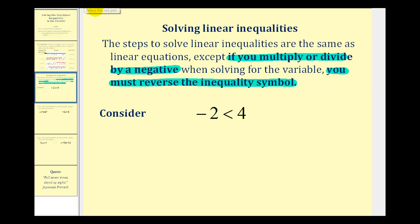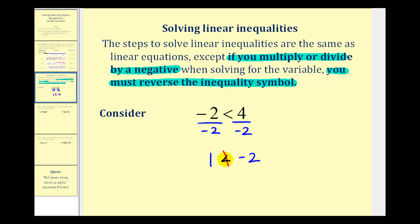If we divide both sides of this inequality by negative two, notice how it gives us positive one is less than negative two. A positive number is never less than a negative number, so this is not true. To make this true, we would have to reverse the inequality symbol: one is greater than negative two. So whenever multiplying or dividing by a negative, we must reverse the inequality symbol.